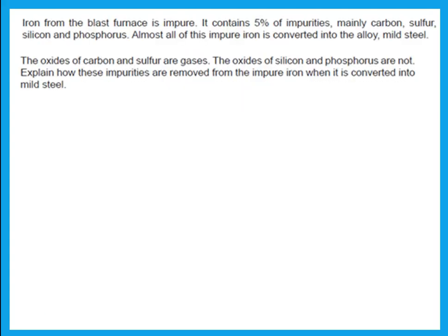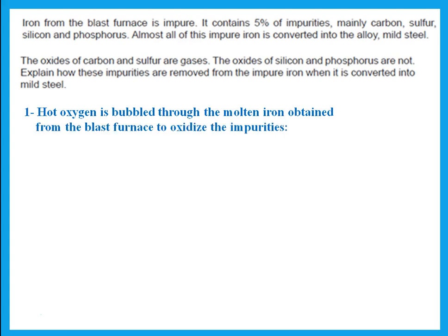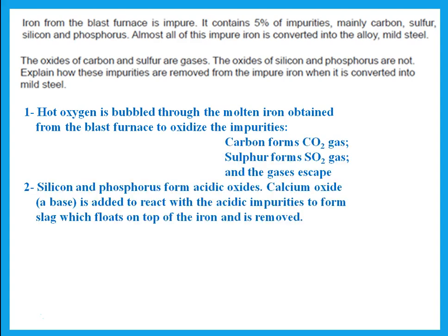Iron from the blast furnace is impure — it contains five percent impurities, mainly carbon, sulfur, silicon, and phosphorus. Almost all of this impure iron is converted into the alloy mild steel. Hot oxygen is bubbled through the molten iron to oxidize the impurities. Carbon and sulfur form carbon dioxide gas and sulfur dioxide gas, which escape. Silicon and phosphorus form acidic oxides, so calcium oxide is added to react with these acidic impurities to form slag, which floats on top and is removed.